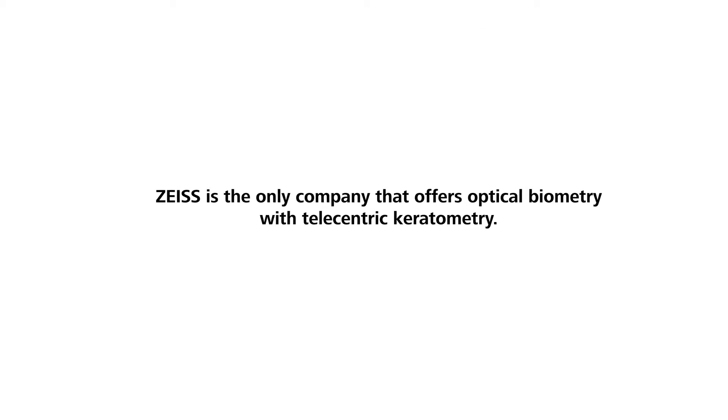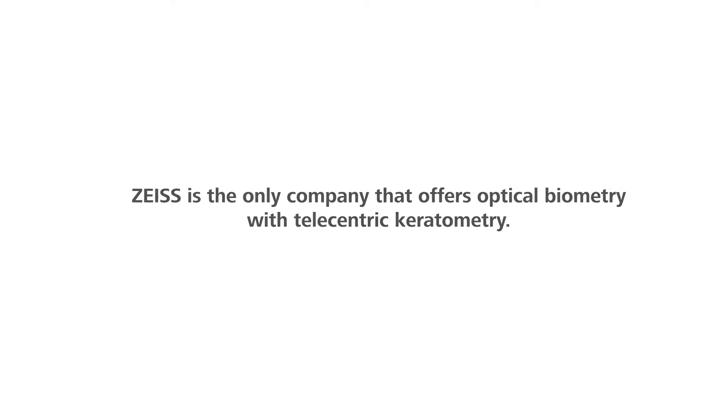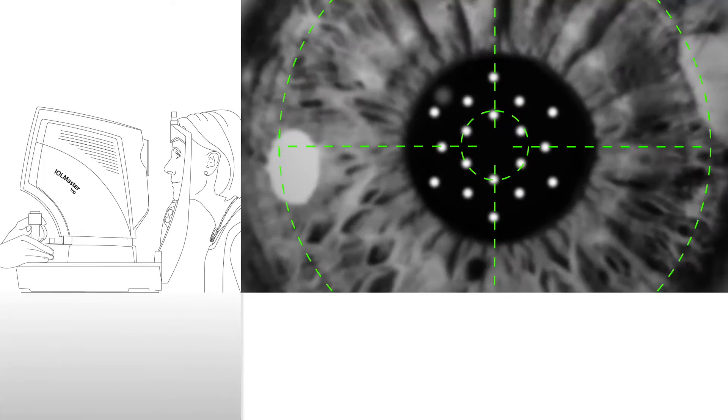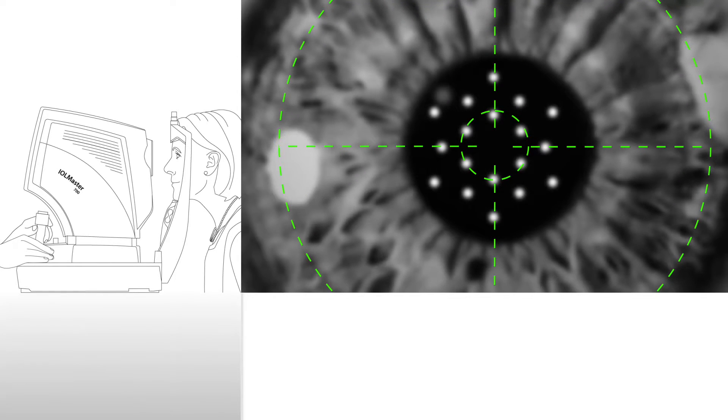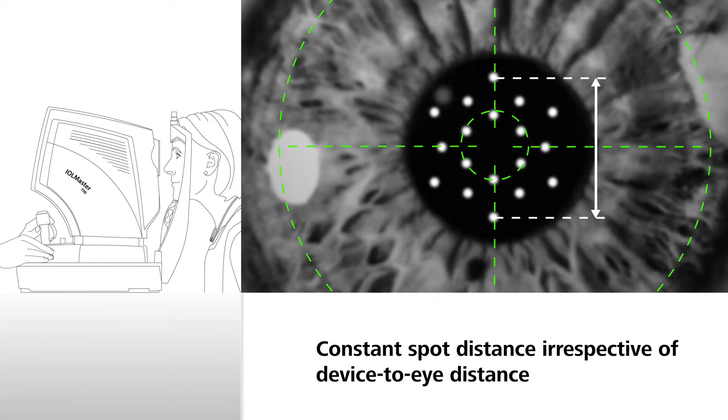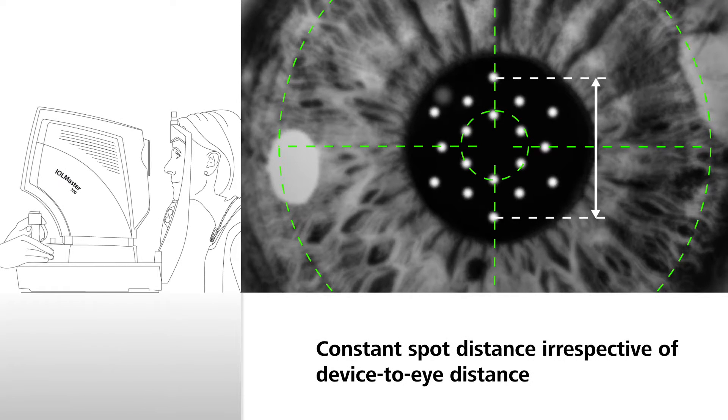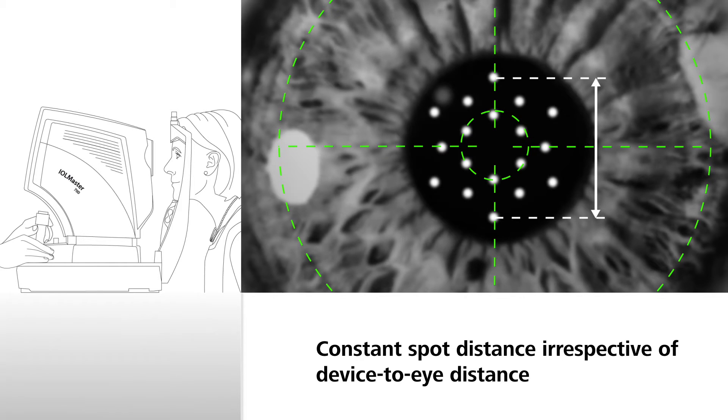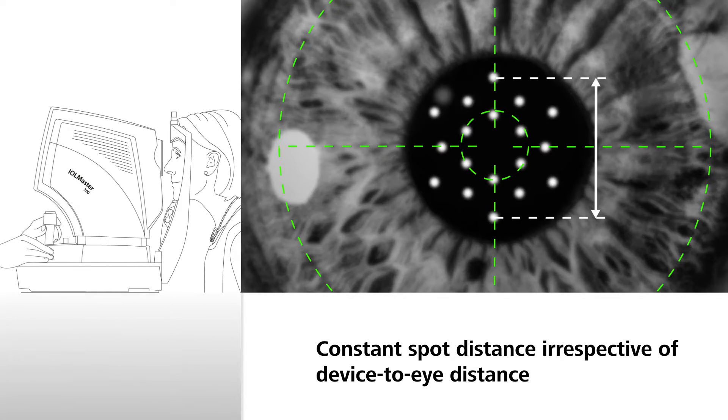Zeiss is the only company that offers optical biometry with telecentric keratometry. Telecentric keratometry of the Zeiss IOL Master 700 uses a smart optical configuration to ensure that spot distances stay constant irrespective of device to eye distance.